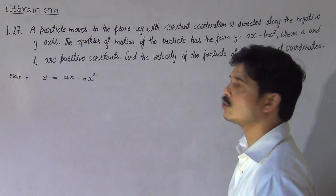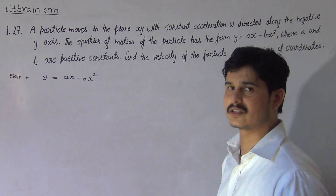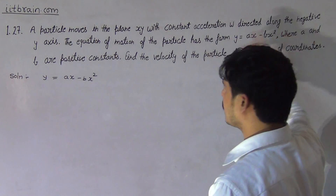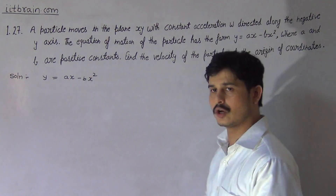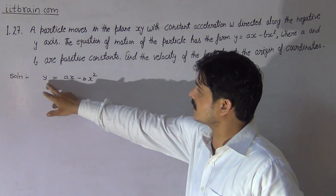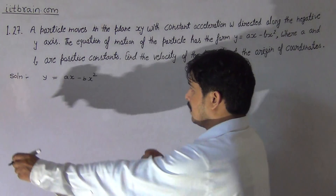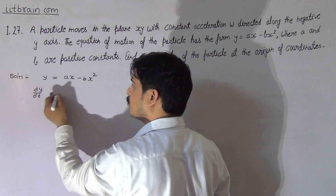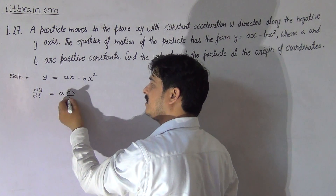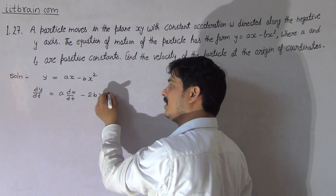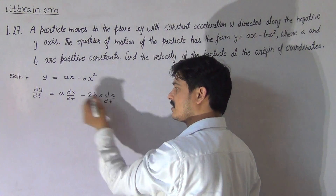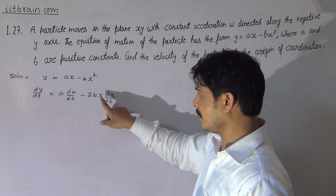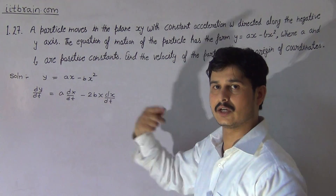Since the direction is also constant, we can say that the acceleration vector is constant. The equation of motion is y = ax - bx². We need to find the velocity of the particle at the origin of coordinates. Differentiating this equation with respect to time, we get dy/dt = a(dx/dt) - 2bx(dx/dt). This is the relation between the y-component of velocity, the x-component of velocity, and the x-coordinate of the position vector.